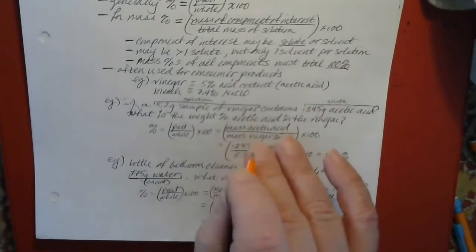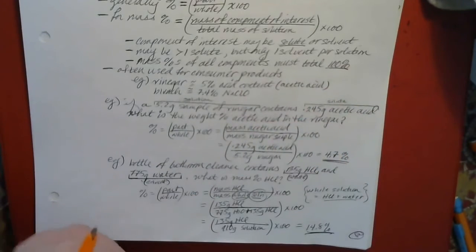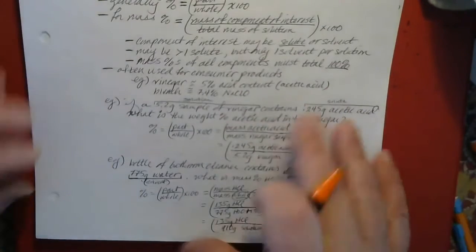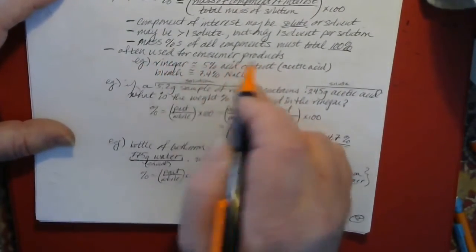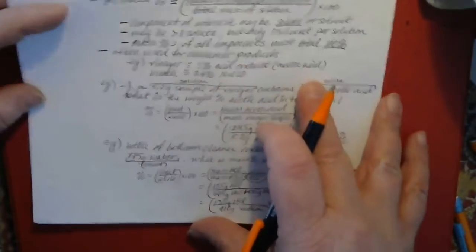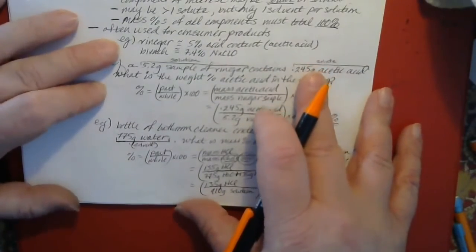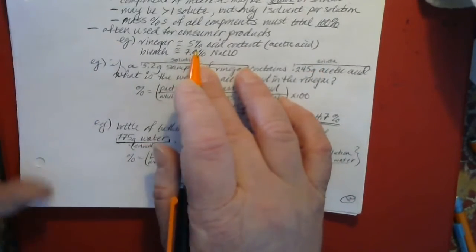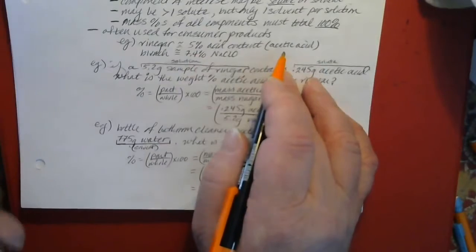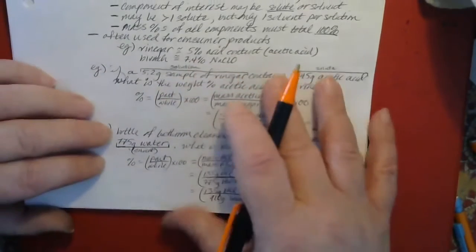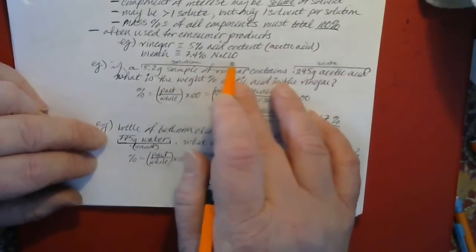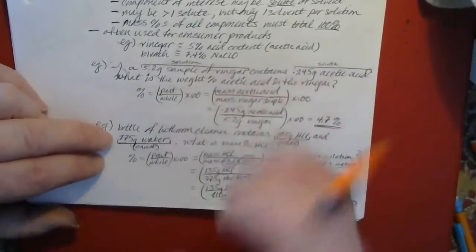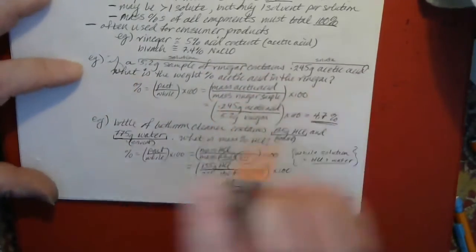Mass percent is often used for consumer products. For instance, the legal specification for vinegar is that it has to be somewhere between about 3% and 5% acetic acid by mass. Bleach is about 7.5% sodium hypochlorite (NaClO) by mass. We can work out some problems with mass percent.